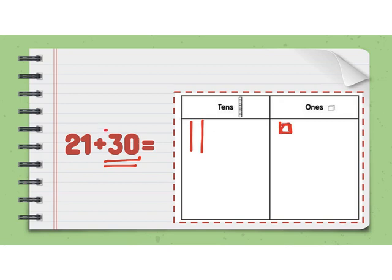If I'm adding I'm going to add 1, 2, 3 tens and I don't have any ones. So to find the answer I'm going to count how many tens I have and how many ones. So I have 1, 2, 3, 4, 5 tens and 1 one. So 21 plus 30 is 51.